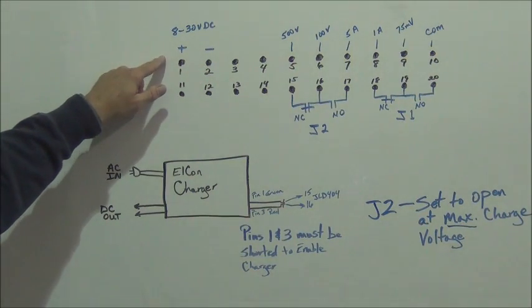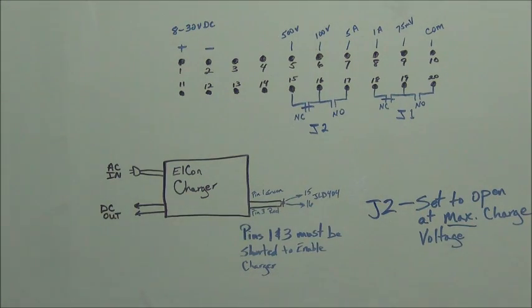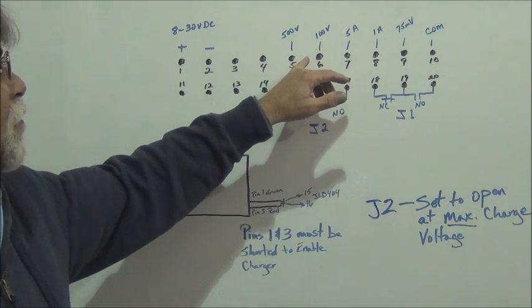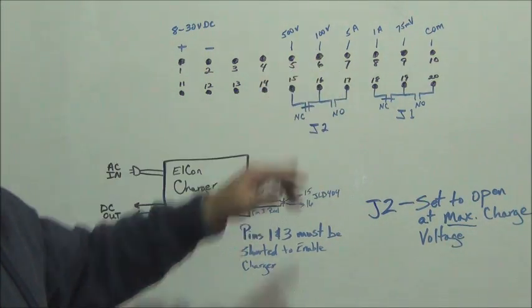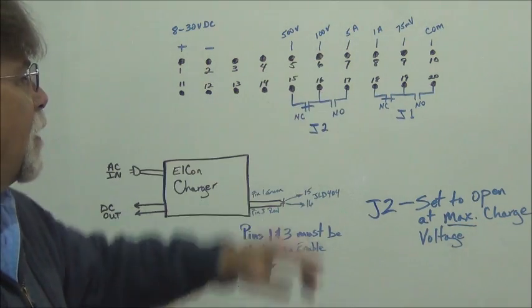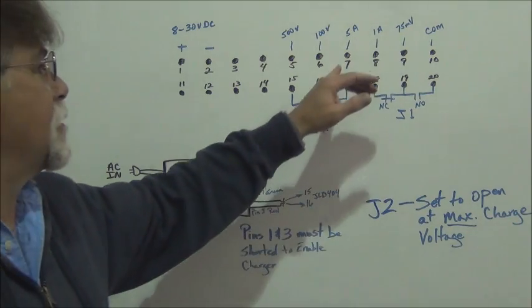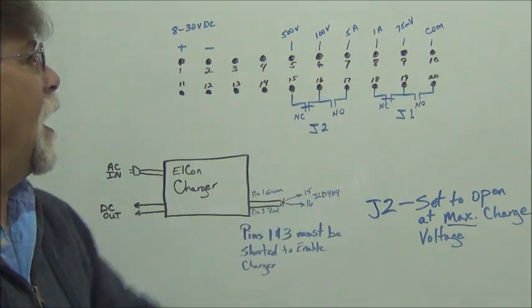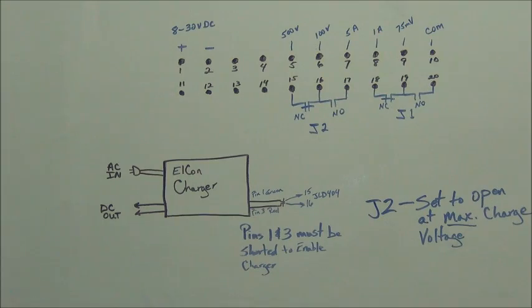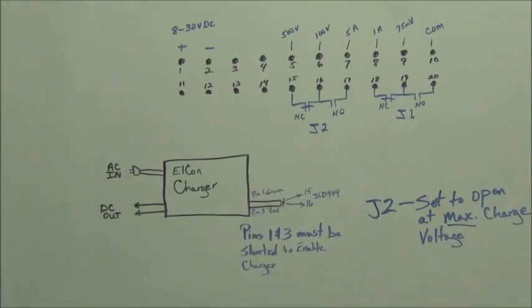One and two are basically your 12 volt power, positive and negative. Five and six are your PAC voltage inputs, the positive PAC voltage inputs. And then seven through ten are your shunt.